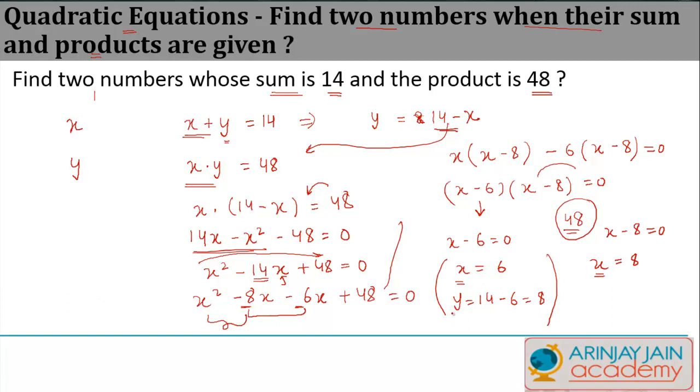But if x is equal to 8, then y is equal to 14 minus 8, or 6. So if you notice, since we were not told what is the other correlation between them, we can have two answers for these two numbers. When x is equal to 6, y is equal to 8. When x is equal to 8, y is equal to 6.